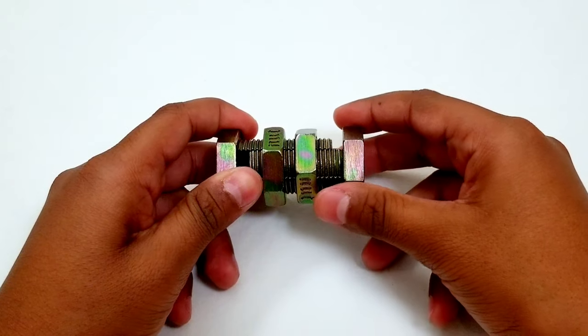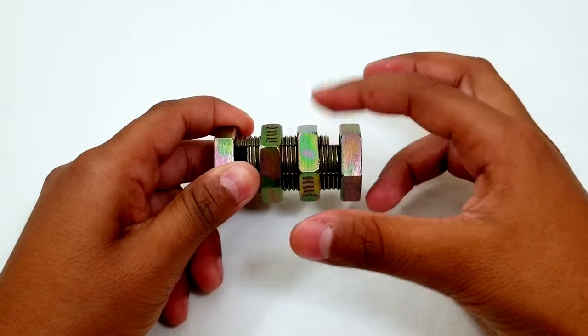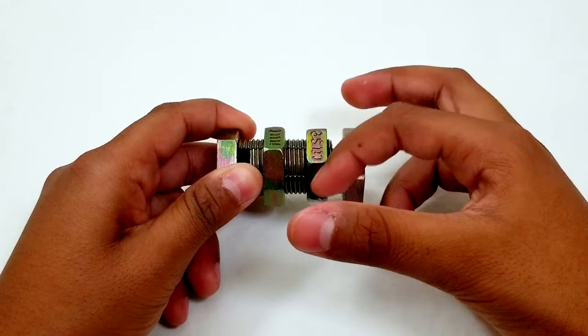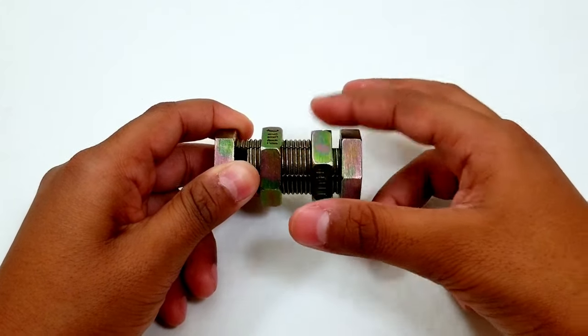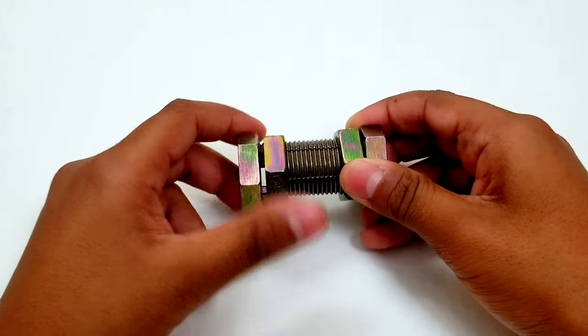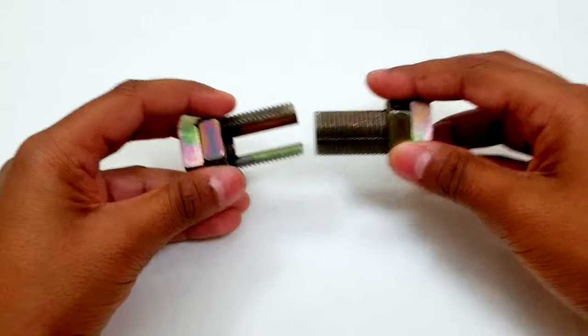After we have opened the puzzle halfway, you have to put the right nut to the end of the bolt and do the same thing with the left nut. Once you do this you can pull the puzzle apart.